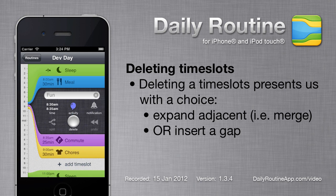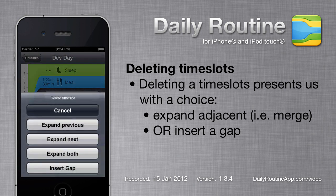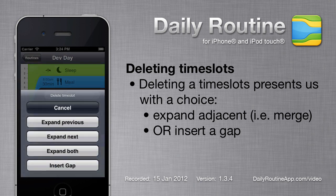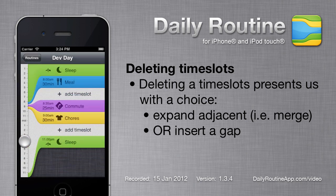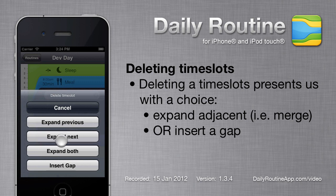When we try to delete a timeslot, we're faced with another decision. Daily Routine is asking us what should happen to the time currently occupied by the timeslot we're about to delete. The simplest option is the last one — Insert a Gap. Here we can see that our deleted timeslot is simply being replaced by a gap. Now I'll fill this gap to demonstrate what the other options do.